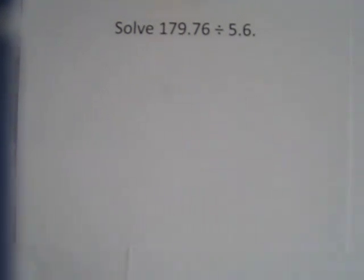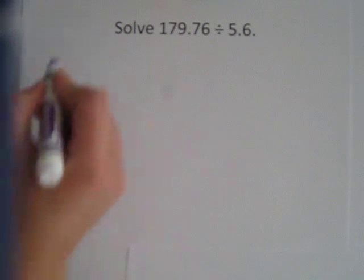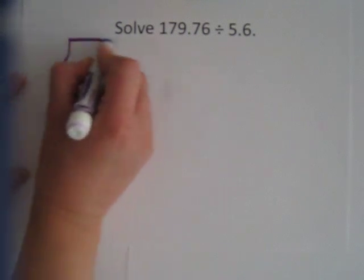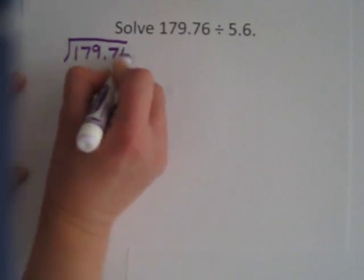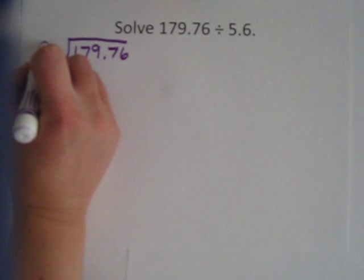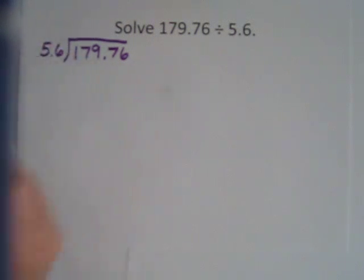Today we are going to solve a division problem using decimals. So we are going to stick with our partial quotients. We're going to solve it using partial quotients. 179 and 76 hundredths divided by 5 and 6 tenths.